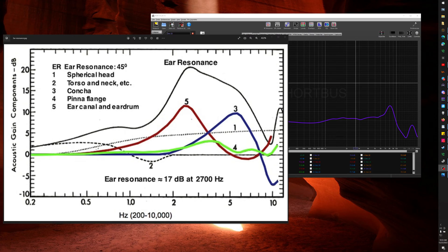That's the concha. That's the outer ear cup, so to speak. And that is right around 5K. And so I guess what they're doing here is they're adding up both of these. And then they come up with this crazy 17 dB at 2,700 hertz ear resonance factor.